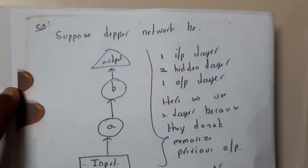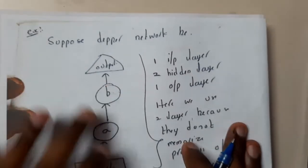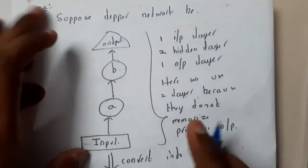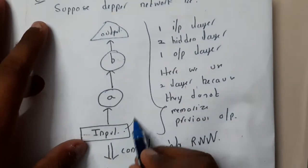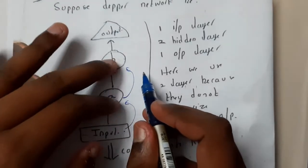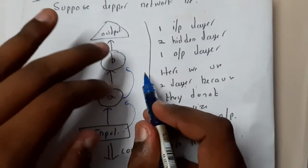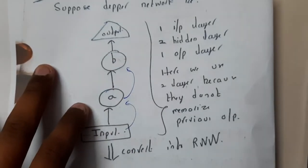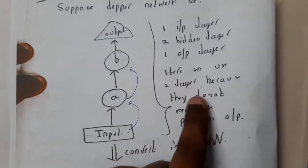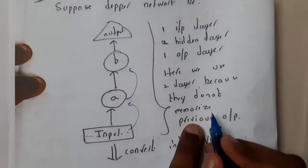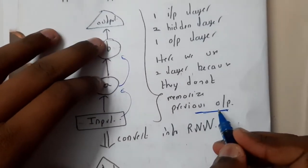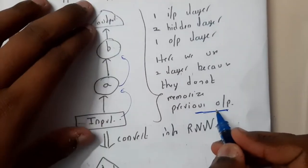So basically in deeper networks or any kind of normal networks it will be in this way. Let us assume you gave an input with value A. This value will be fed to one more input and you'll be getting the output. Here we are having multiple layers - these layers are nothing but your hidden layers. Here we have one input layer, two hidden layers, and one output layer. Here we use two layers because there is no need of memorizing the previous output.